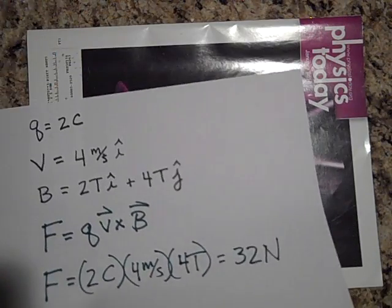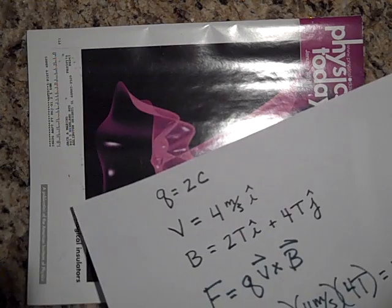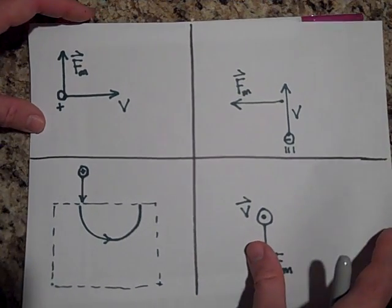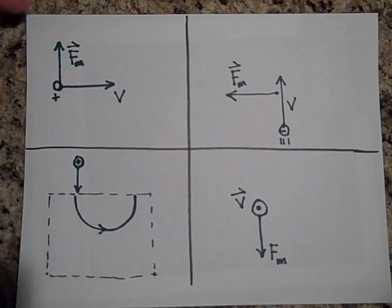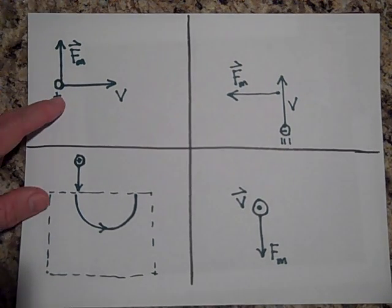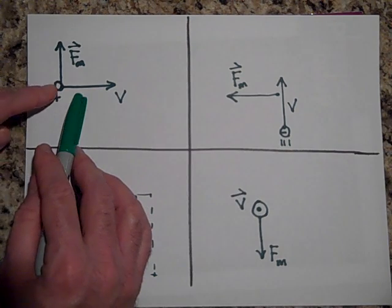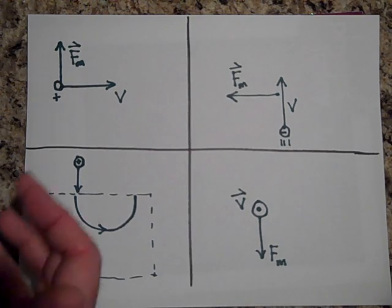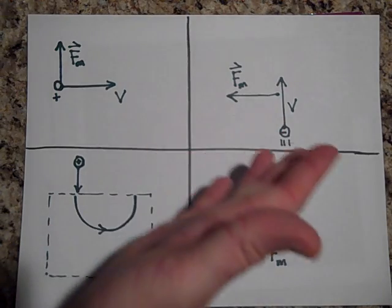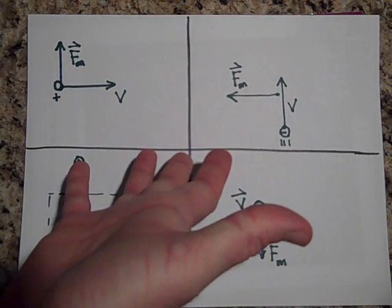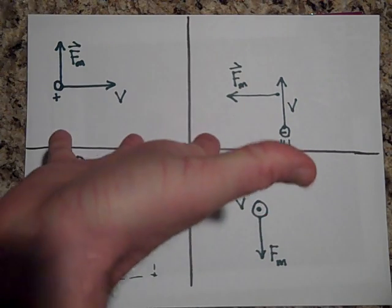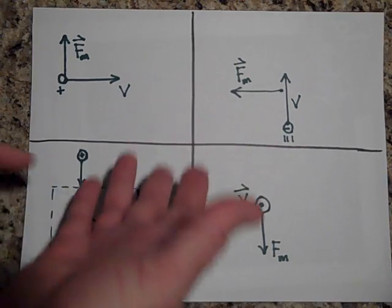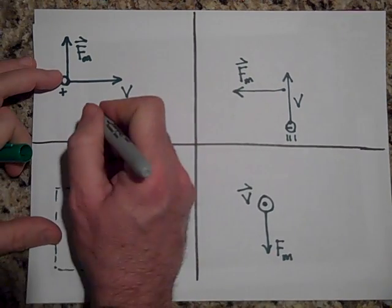Now let's practice finding the field direction when the force is given — the second objective. If this is a positive charge heading this way and the magnetic force is up, which way does the field have to be? Using the right hand for a positive charge: put your thumb in the direction of v and arrange so the force points up. In order for the force to be up, b has to be into the page.